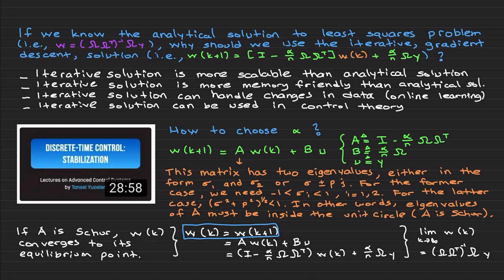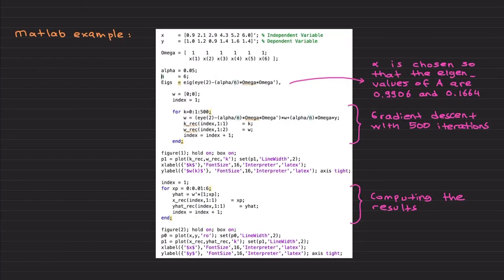I understand this is a lot to handle, but I don't want to give vague statements like 'start alpha small then do arbitrary stuff' — that's not my style. The punchline is: if the eigenvalues of the A matrix are inside the unit circle, the gradient descent solution to the least squares problem will converge to the analytical solution as k goes to infinity. Now it's time for a MATLAB example.